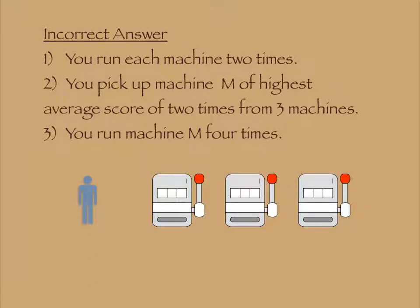One incorrect answer is as follows. You run each machine 2 times. You pick up machine M of highest average score over 2 times. You run machine M 4 times. This method uses initial estimation of performance of slot machines.